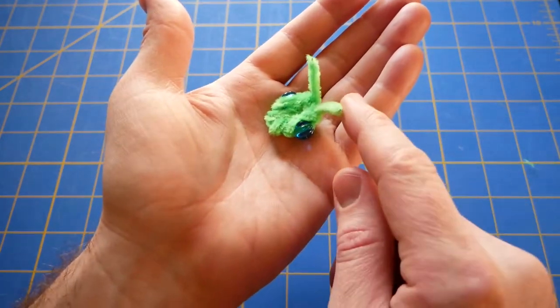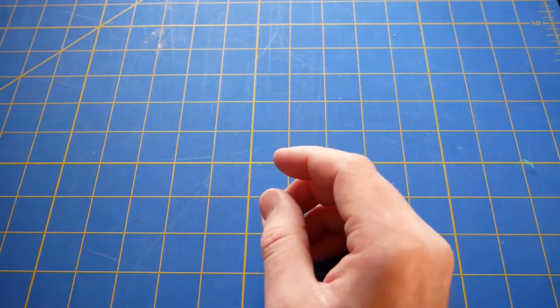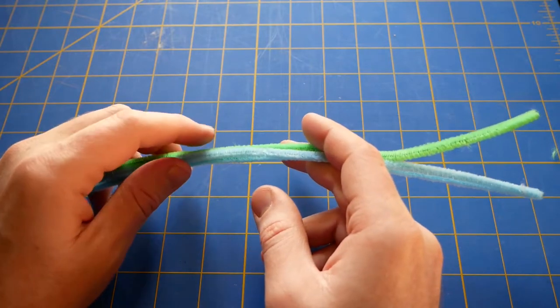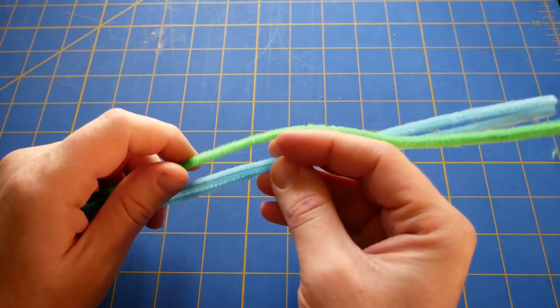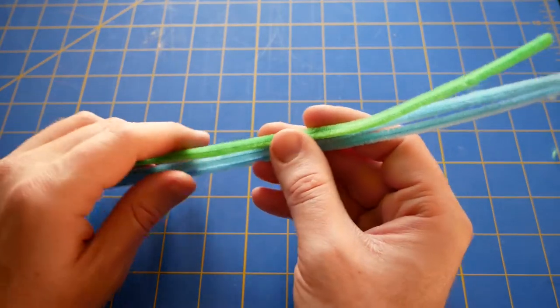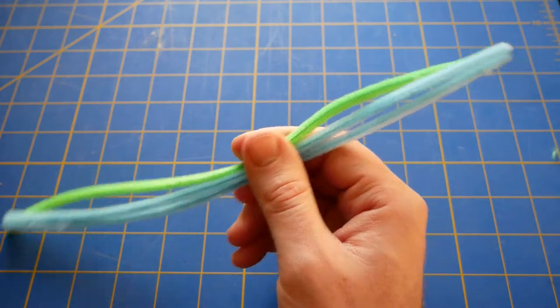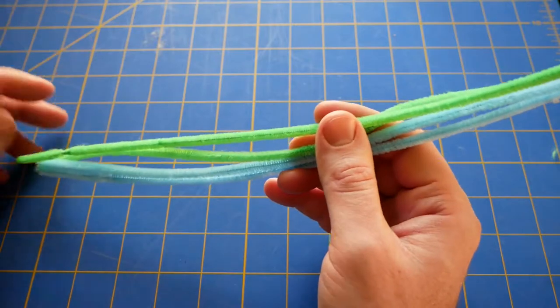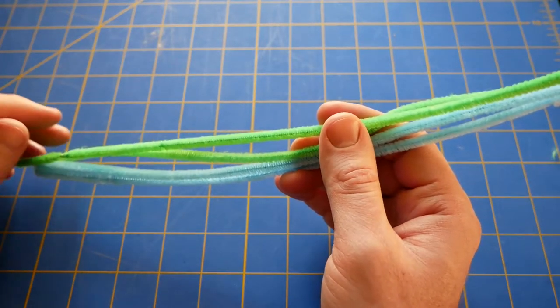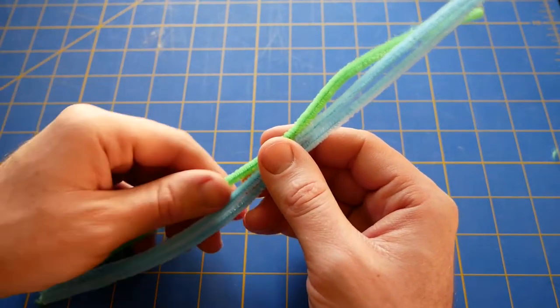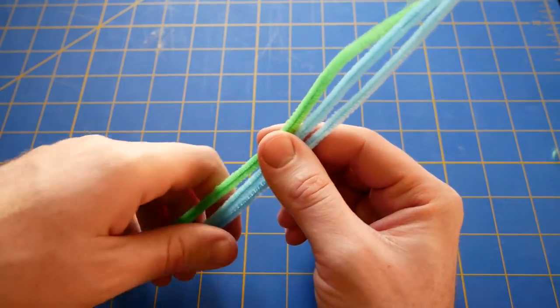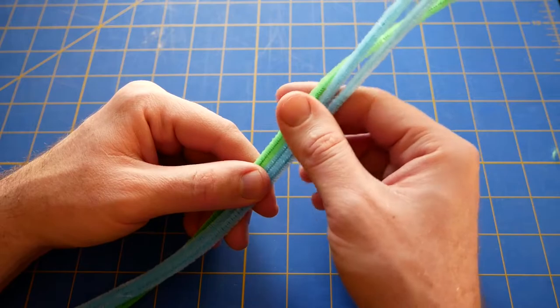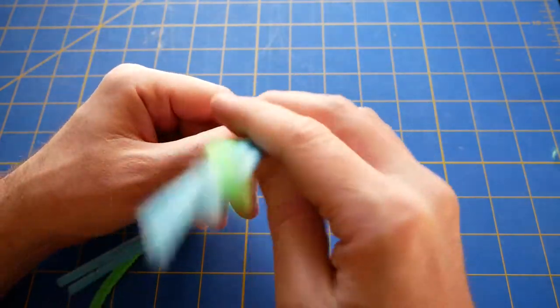Okay, now to make the body of the praying mantis, take some pipe cleaners. Here I'm going to use some different color pipe cleaners, but you can make your praying mantis all in one color if you want. In nature, sometimes they're multicolored, so whatever you want to do. All right, so what you're going to do is you're going to take three pipe cleaners and you're going to bend them in the middle.